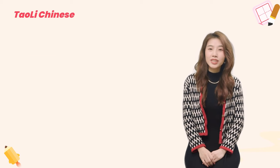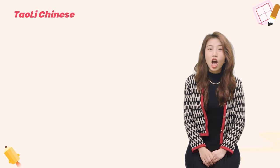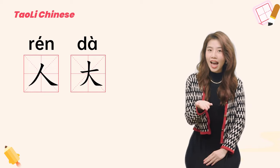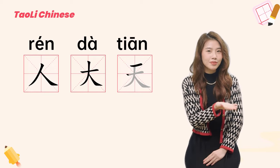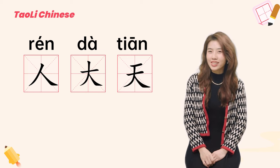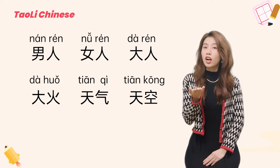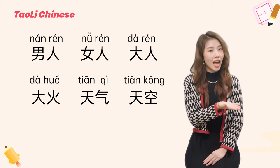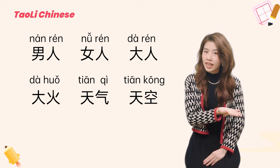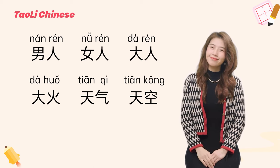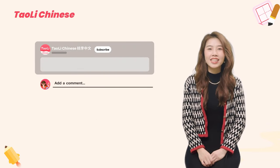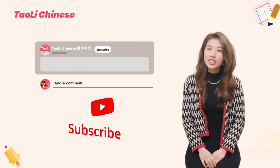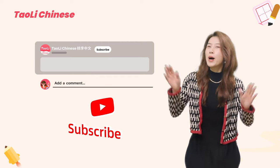This is the end of today's Chinese character lesson. Before we say goodbye, let's take a quick review. We have learned three single characters: 人, 大, and 天. We also learned six common words: 男人, 女人, 大人, 大火, 天气, and 天空. I hope you enjoyed this video. Don't forget to leave comments and subscribe to our channel. Practice more and I will see you in the next video. Bye bye!